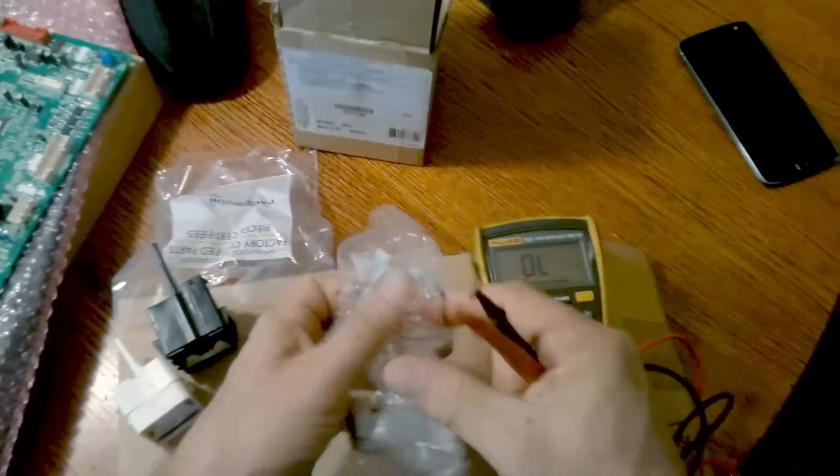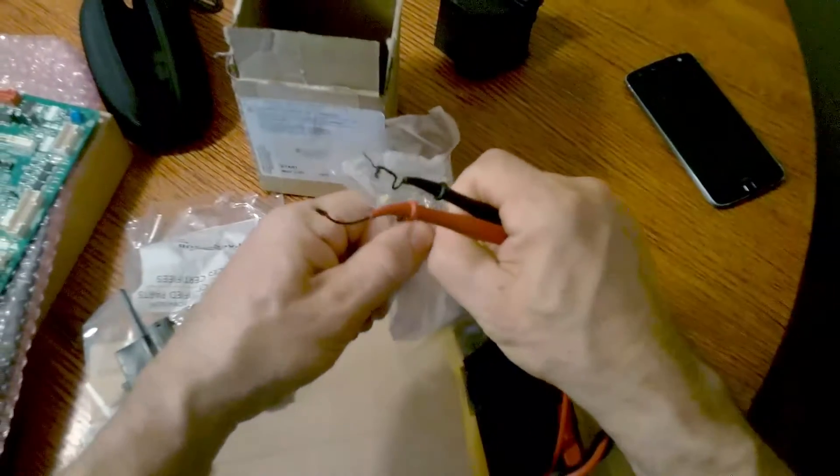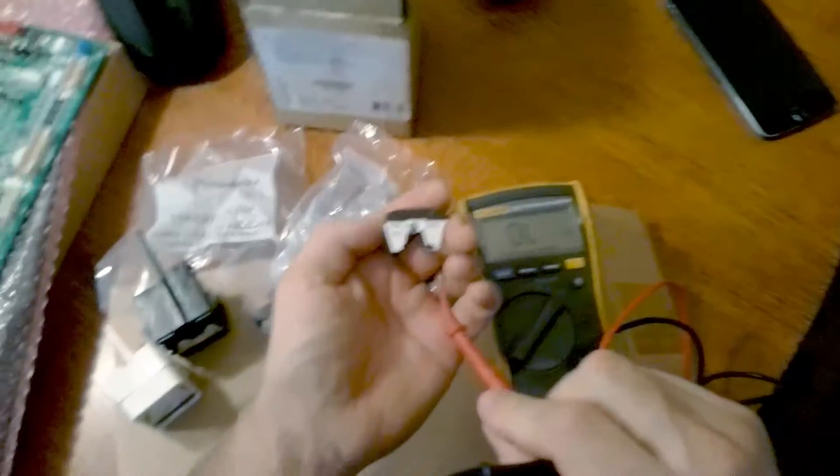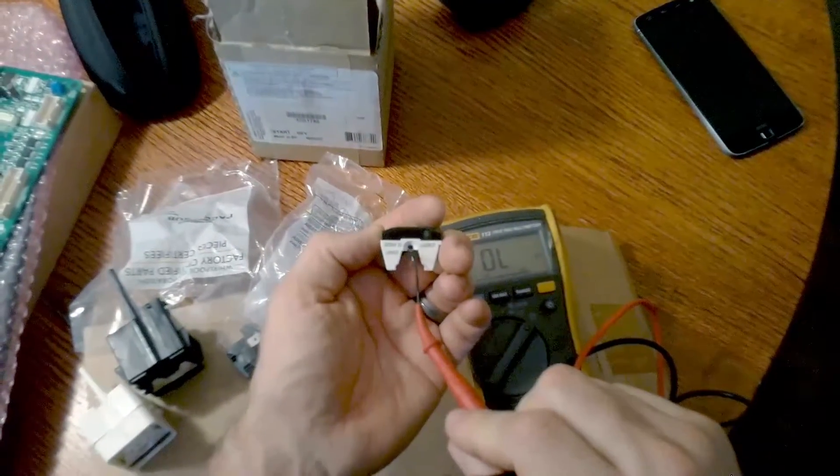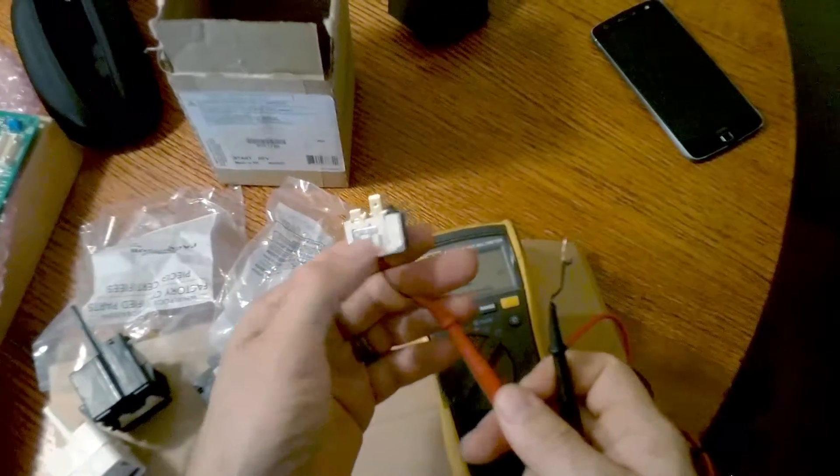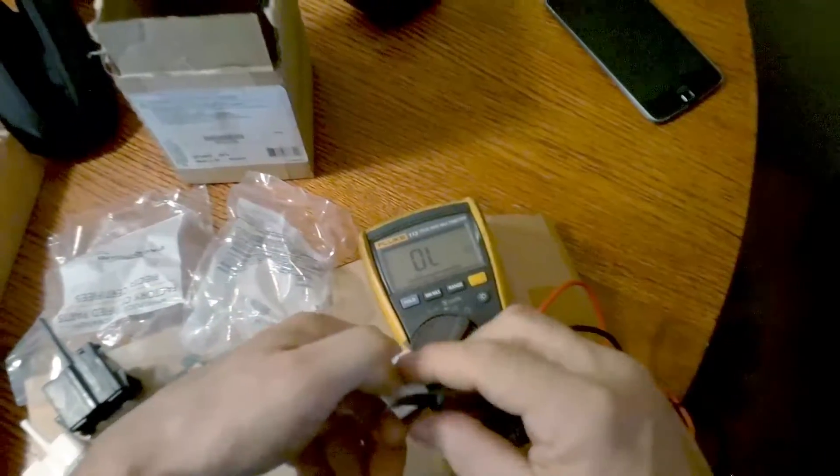And this is your overload. This is where the main common power comes in to start the compressor. They usually never go bad, but if you want to test it, you put your multimeter in the top pin and then the back pin.